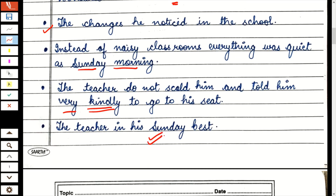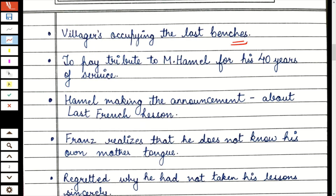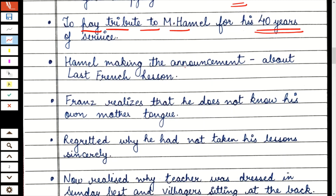The teacher was in his Sunday best — ये भी next point है। Villagers occupying the last benches — ये भी आपको याद रखना है कि last benches पे उस दिन villagers बैठे हुए थे। Mayor था, old Hauser था — ये सारे लोग last benches पर बैठे हुए थे। वो क्यों बैठे थे? To pay tribute to Mr. Hamill for his 40 years — याद रखना कितने years की service थी Mr. Hamill की — villagers वहाँ Mr. Hamill को tribute pay करने के लिए बैठे हुए थे।